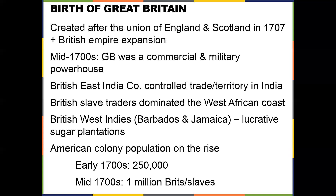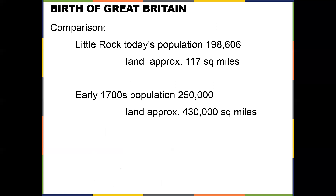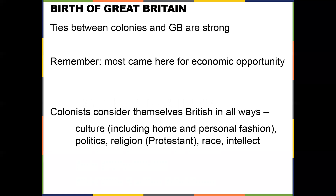By the mid-1700s the colony population had jumped to 1 million, including slaves. To put that in perspective, in the early 1700s 250,000 people were spread over a whopping 430,000 square miles. Today Little Rock's population is under 200,000 in only 117 square miles — so population crowding was not a problem in the early 1700s.